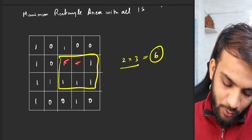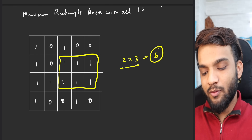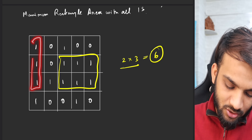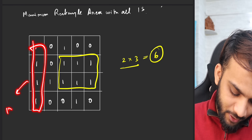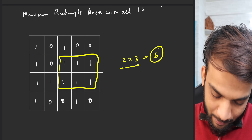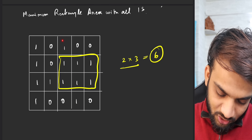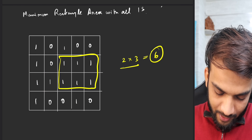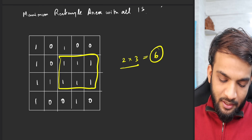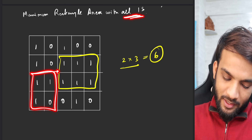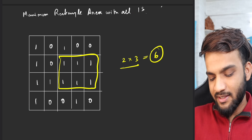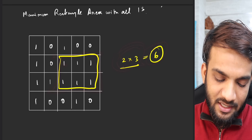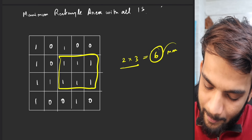The area is six with all ones. There are other rectangles too — this one, this one of one by four — but some are not valid because they contain a zero. So the rectangle with all ones and length times breadth equal to six is the maximum you can get.